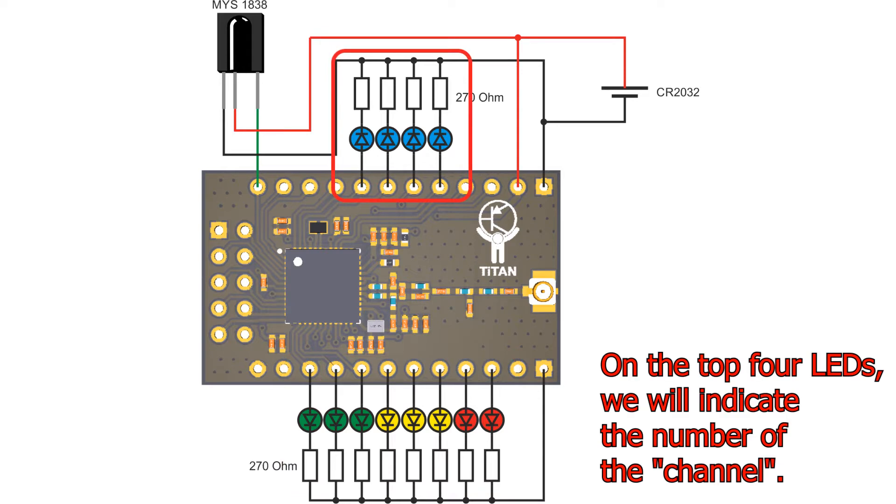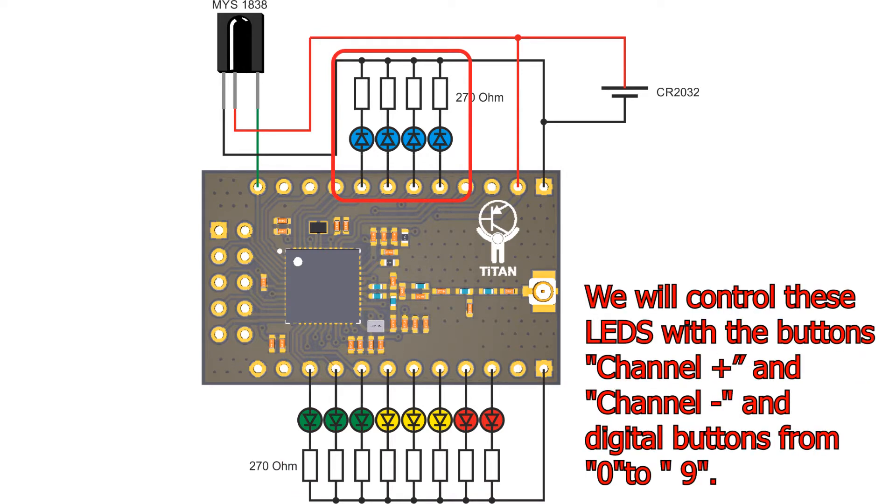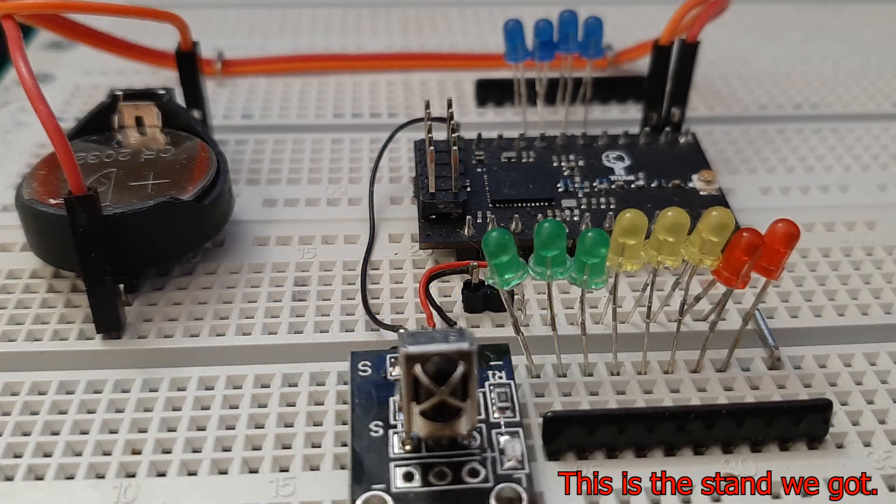On the top 4 LEDs we will indicate the number of the channel. We will control these LEDs with the buttons channel plus and channel minus and digital buttons from 0 to 9. This is the stand we got.